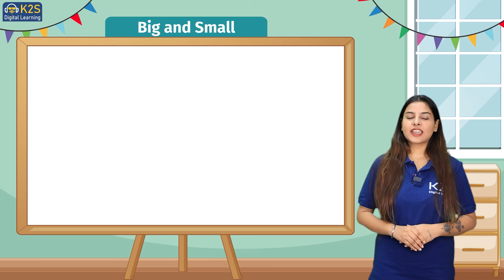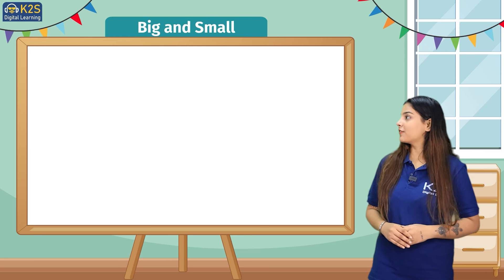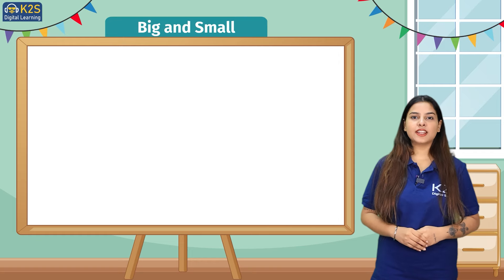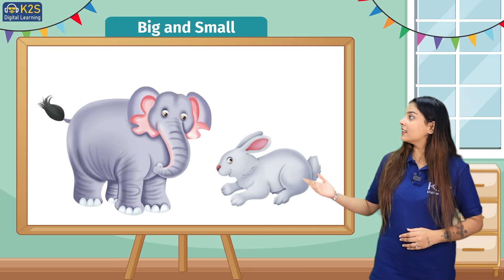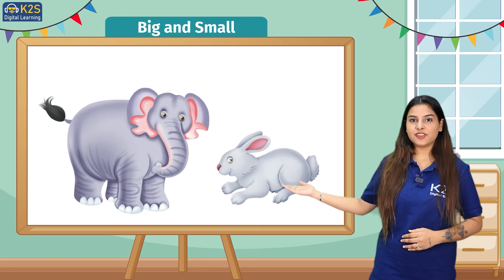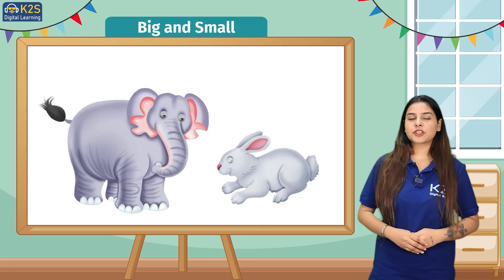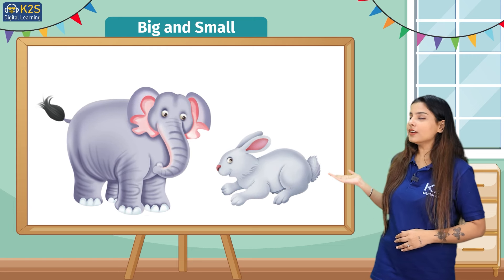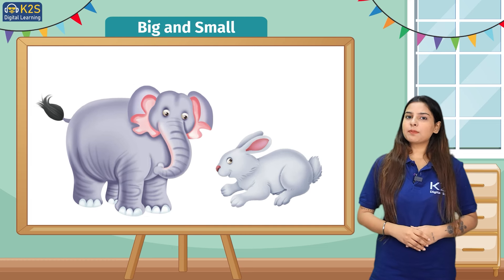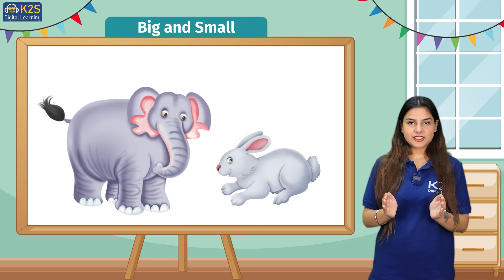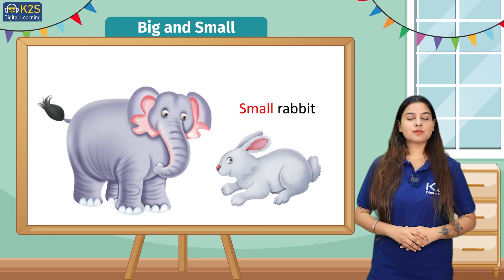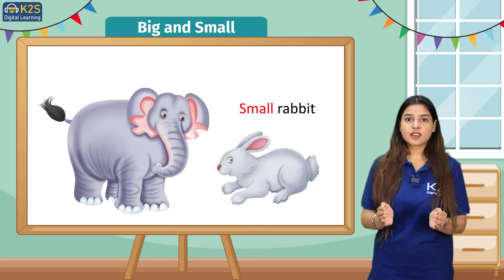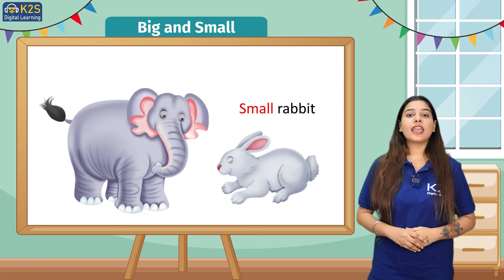The second topic is big and small. In front of you there are two pictures. In one picture there is an elephant. In the other picture there is a rabbit. Kya aap ne kabhi rabbit dekha hai? The rabbit is very small — very small in size compared to an elephant.